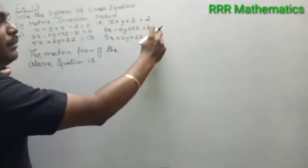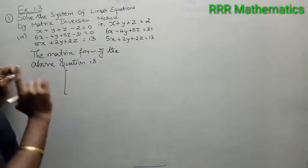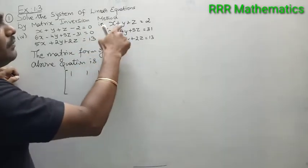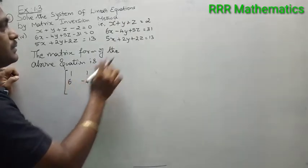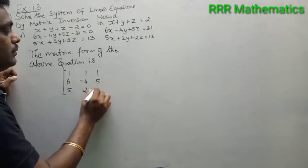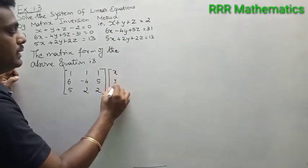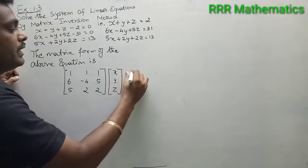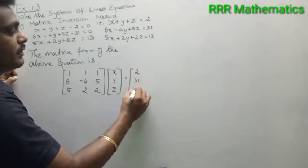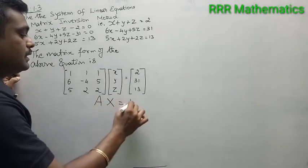The matrix form of the above equations is: first write all the coefficients of x, y, z. Row one: 1, 1, 1. Row two: 6, minus 4, 5. Row three: 5, 2, 2. Variables x, y, z equal to the constant values on the right hand side: 2, 31, and 13. This is Ax equal to b.